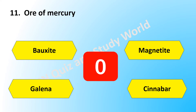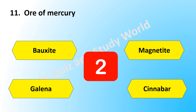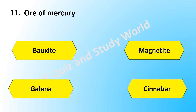Which is the ore of mercury? Is it bauxite, magnetite, galena, or cinnabar? The answer is cinnabar.